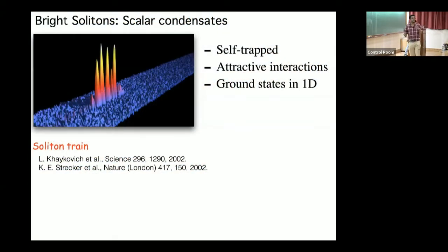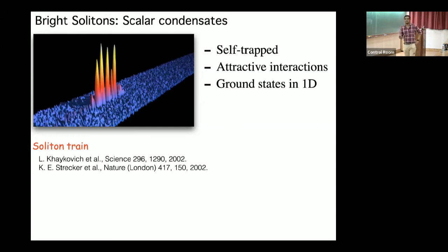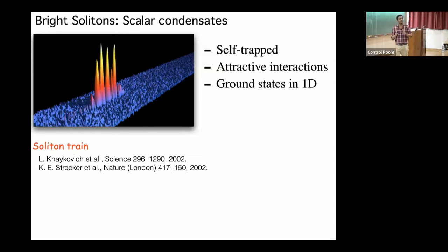Bright solitons are self-trapped condensates that require attractive interactions. Unfortunately, they are stable only in 1D; in 2D and 3D the condensate collapses. Experimentally, people have already seen the formation of bright solitons — here you see an array of bright solitons. In experiments, they create a repulsive stable condensate and use Feshbach resonance to drive it to attractive interaction, creating a bright soliton array. The interaction between two bright solitons depends on their relative phase.